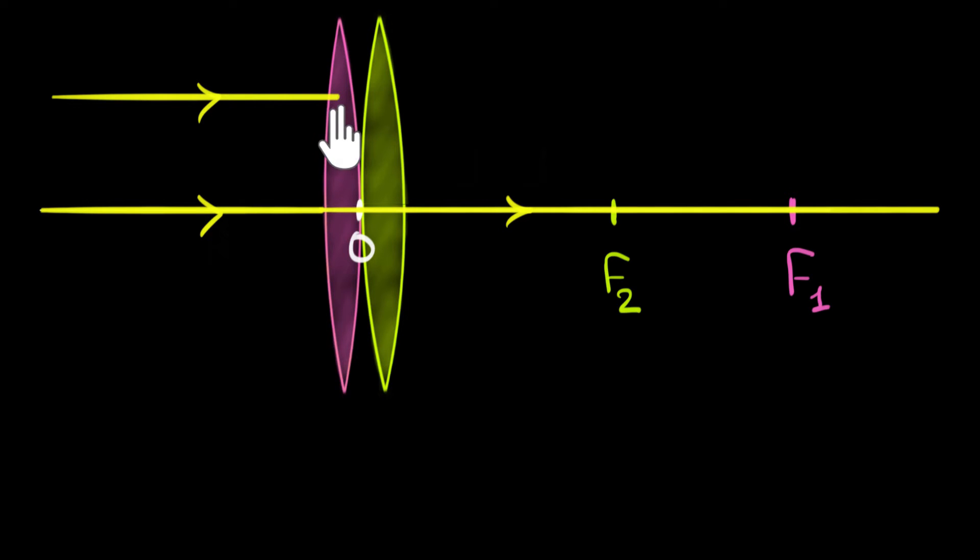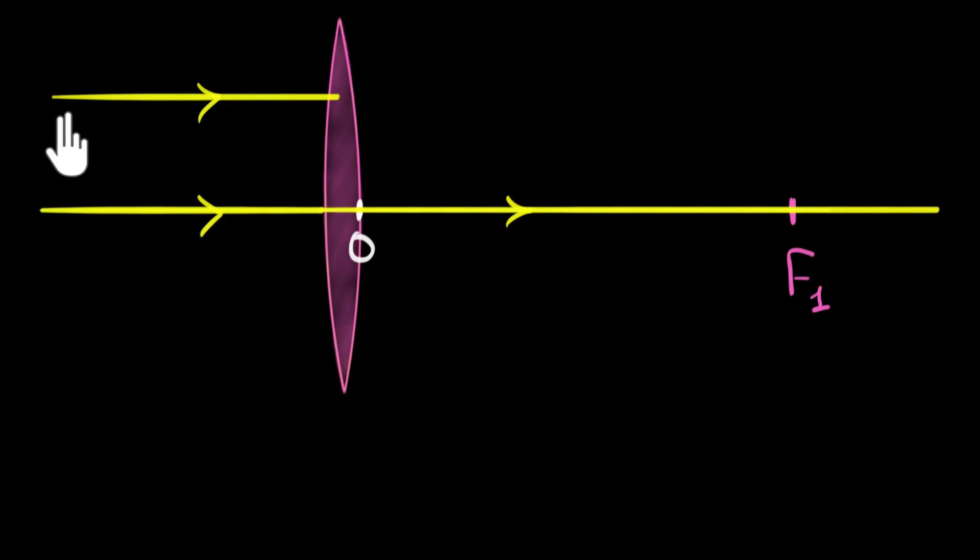This ray of light is going to bend twice, once here and once over here. In such cases to draw ray diagrams, what we're going to do is first neglect this second lens and assume only the first lens exists. So in the absence of the second lens, where would this ray go?